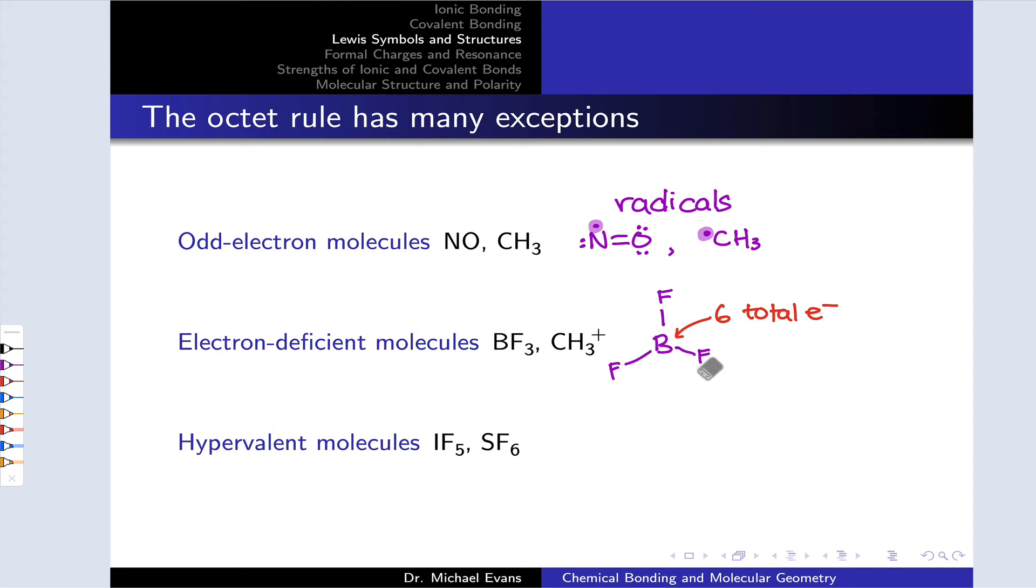This boron has 2, 4, 6 total electrons for the purposes of the octet rule. So it's violating the octet rule, only six electrons around that boron. But this is certainly a valid Lewis structure for BF3.